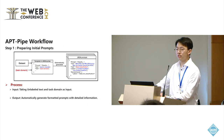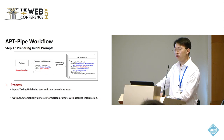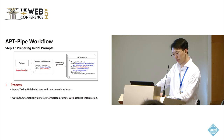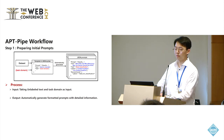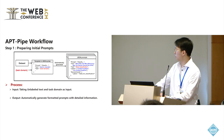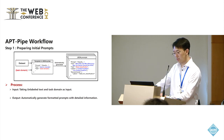APTPipe involves three steps to finish its prompt tuning task. First, it receives the unlabeled dataset and task text domain, and generates the prompt in a predefined format. The prompt format can be customized based on different task settings. In our work, we select the JSON format based on comparison with several baseline formats.